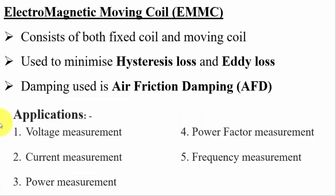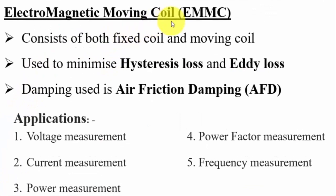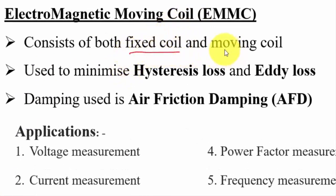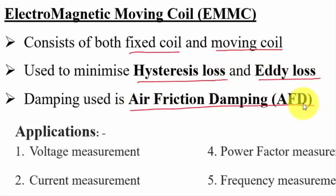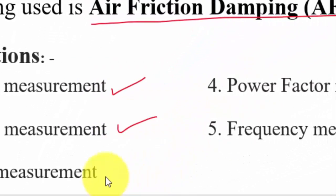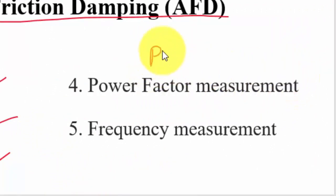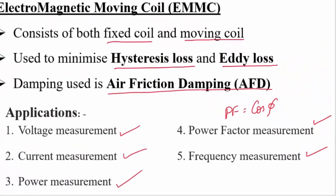EMMC — electromagnetic moving coil — consists of both a fixed coil and a moving coil. PMMC has a moving coil; MI has a fixed coil; EMMC has both. It is used to minimize hysteresis loss and eddy current loss. Damping used is air friction damping. Using EMMC you can measure voltage, current, power, power factor (cos φ), and frequency.